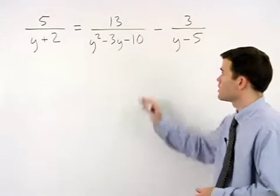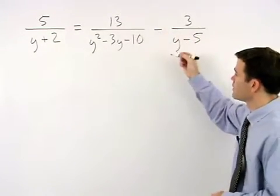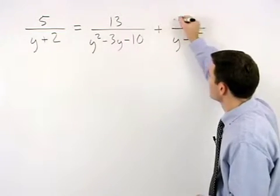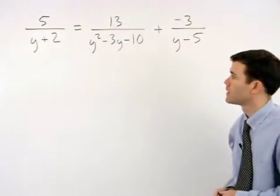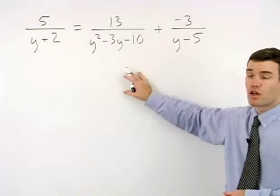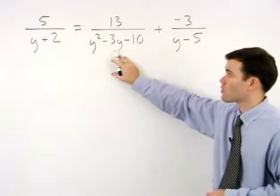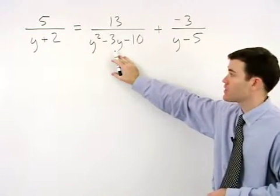Start this problem by changing the minus 3 to plus a negative 3. To find the common denominator, notice that we must factor y squared minus 3y minus 10 as y minus 5 times y plus 2.